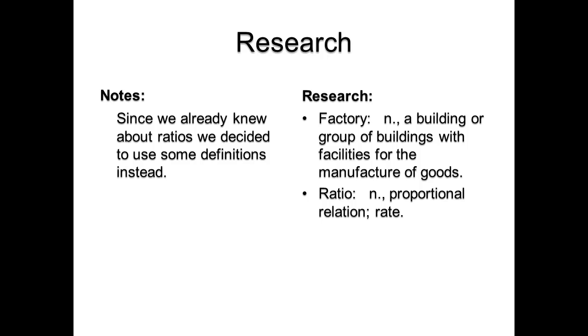To help understand the problem, we did research on the problem. Since we already knew about ratios, we decided to use some definitions instead. The definitions are factory and ratio. A factory is a noun, and it is a building or a group of buildings with facilities for the manufacture of goods. A ratio is a noun, and it means a proportional relation, such as rate.